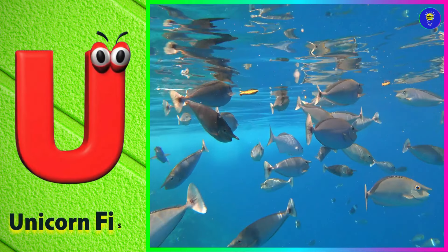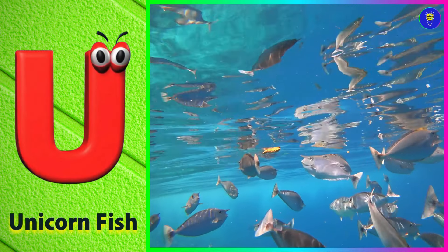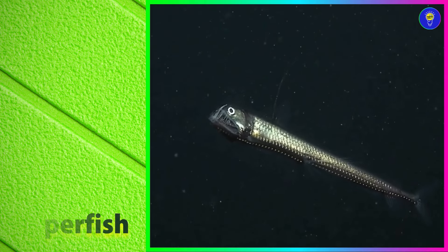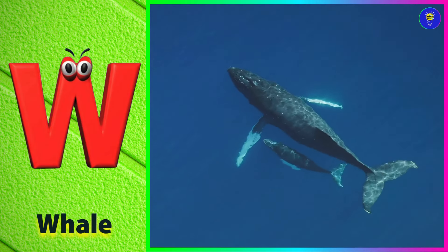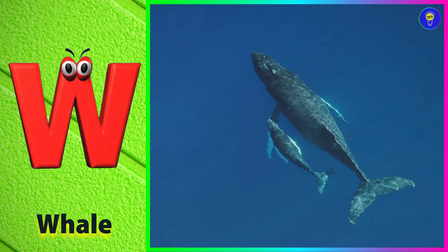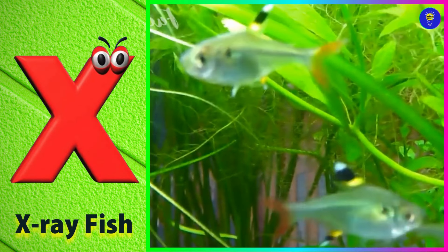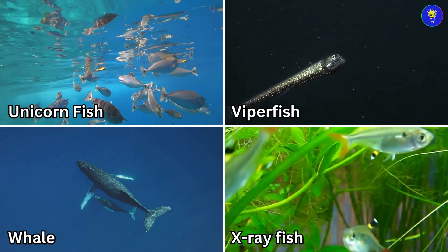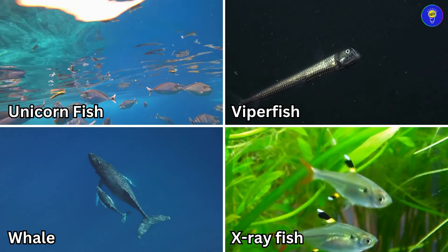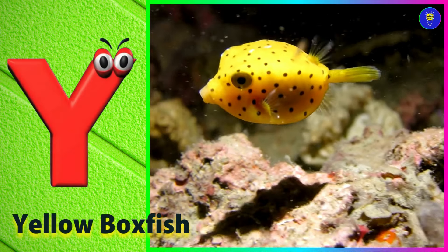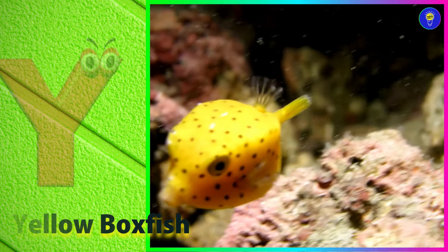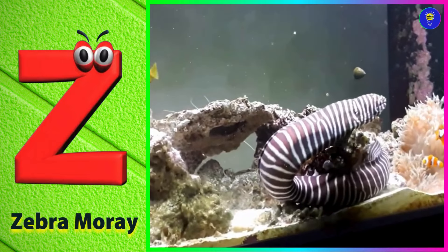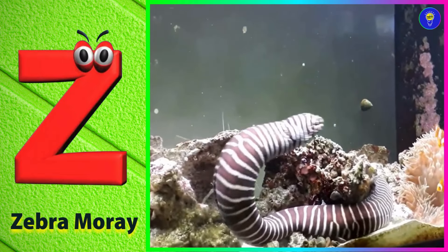U is for unicorn fish. V is for viperfish. W is for whale. X is for x-ray fish. Y is for yellow box. Z is for zebra moray. Thank you.